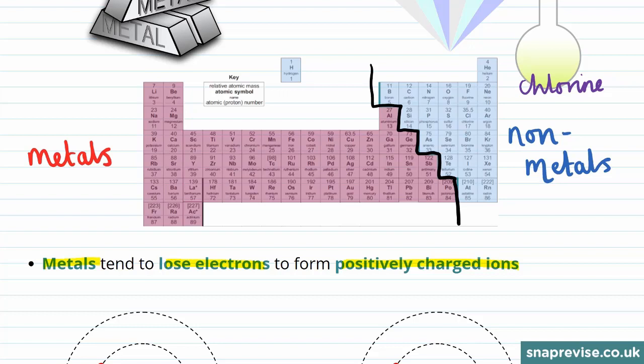Metals are found on the left-hand side of the periodic table, meaning that in general their group numbers are lower than for non-metals.